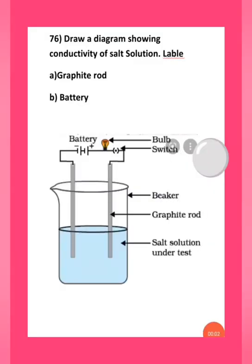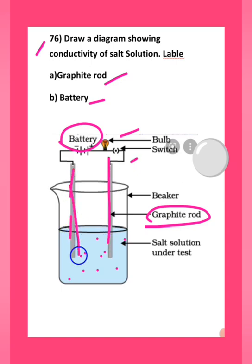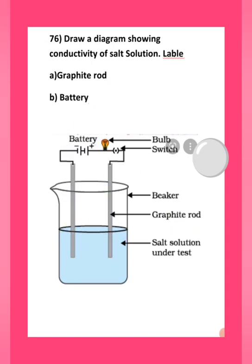Question number 76 from chemistry: draw a diagram showing conductivity of a salt solution, labelling the graphite rod and battery. Draw the salt solution inside a beaker, with graphite rods on either side, connected to a battery, a switch, and an output bulb.